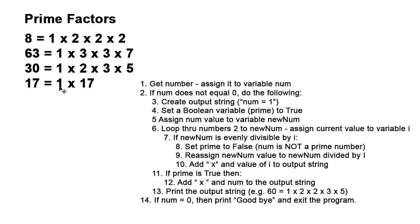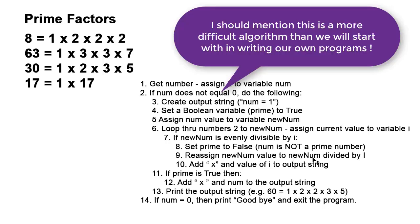Meaning we now have another number besides one and itself that is one of the prime factors, so it's no longer a prime number. So we set prime to false. I'm going to reassign newNum now to newNum divided by i.